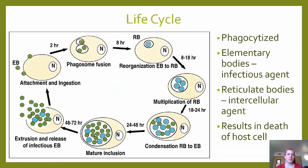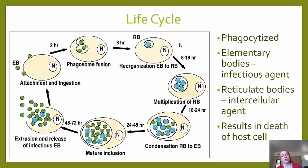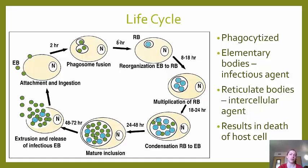Life cycle: the elementary bodies are phagocytized, and once inside the cell they become vegetative reticulate bodies. These are the intracellular agents that use ATP and multiply. Eventually the reticulate bodies, once matured, turn back into elementary bodies, resulting in bursting of the cell and death of the host cell. The elementary bodies then attach to and infect other cells.